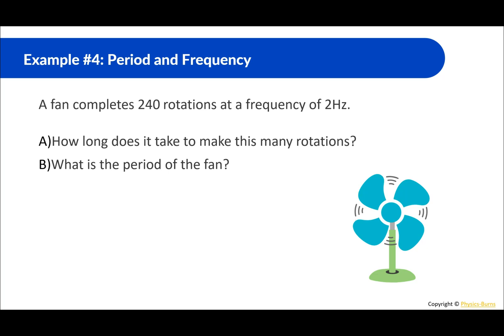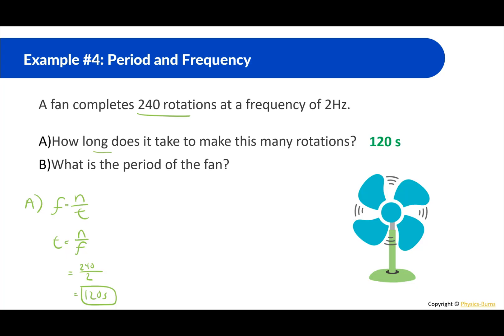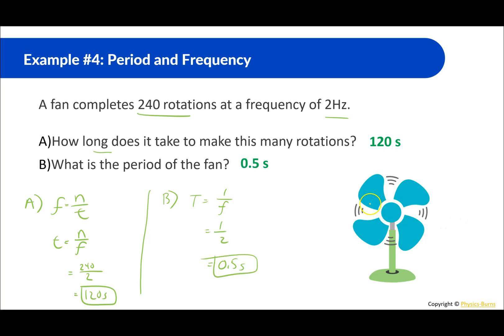A fan completes 240 rotations at a frequency of 2 hertz. How long does it take? Frequency equals cycles divided by time, so rearranging: time equals cycles divided by frequency — 240 divided by 2 equals 120 seconds. What is the period? Using period equals 1 over frequency: 1 divided by 2 equals 0.5 seconds. So this fan completes one full rotation every half a second, and it takes 120 seconds total to complete 240 rotations.